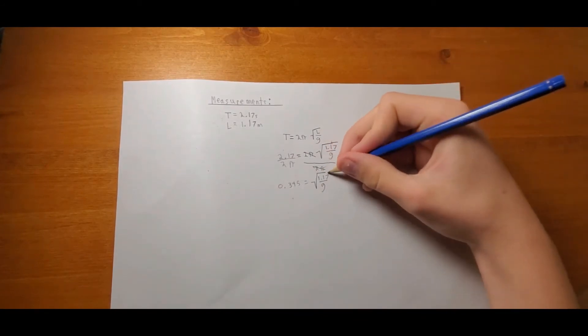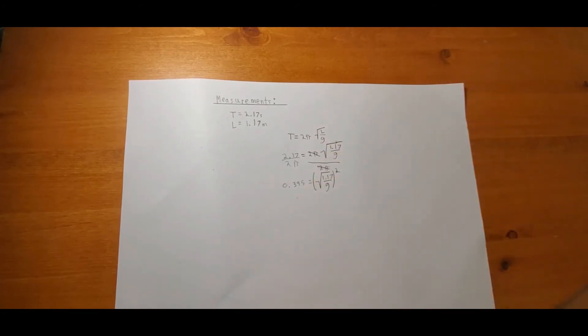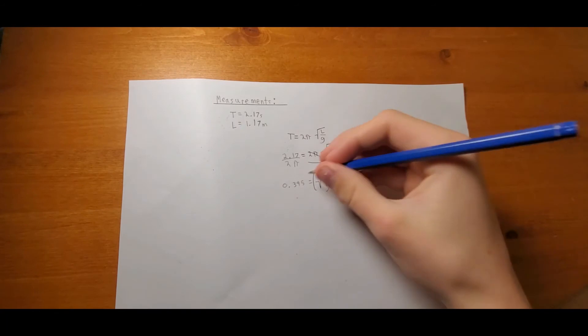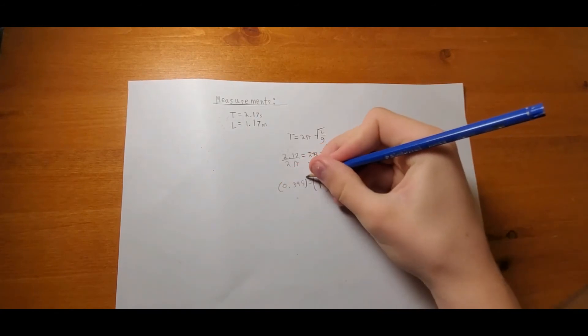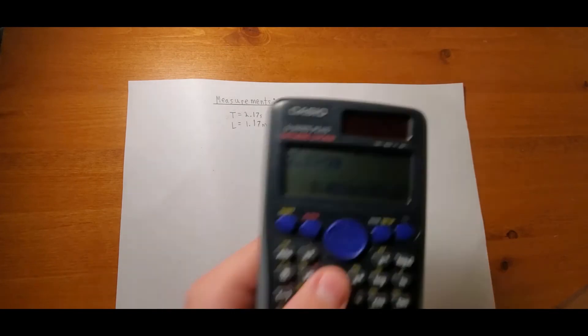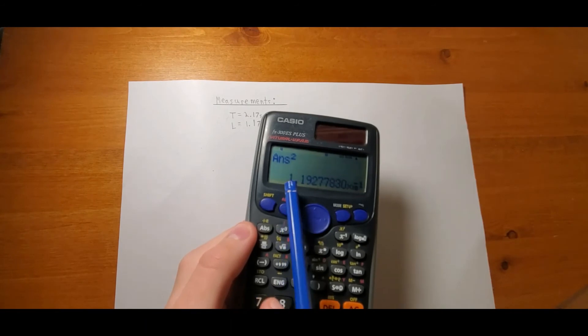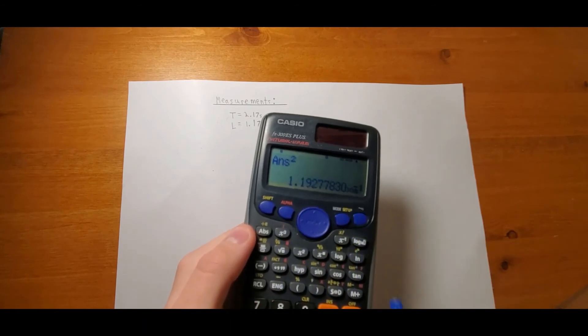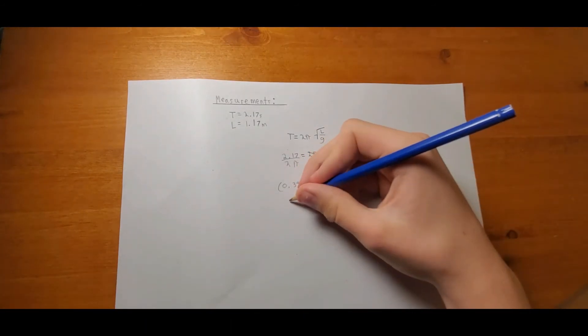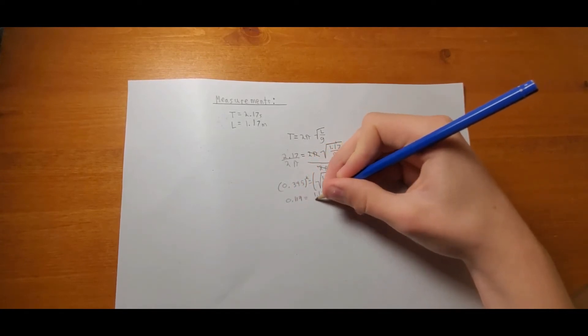Now, we're going to square both sides. So, we can't just square that side, we need to square both. Now, we can just square that. As you can see, 1.19 times 10 to the negative 1, or, as we can write down here, 0.119 equal to 1.17 over g.